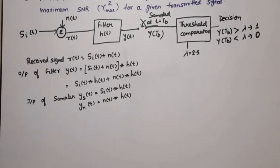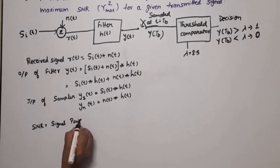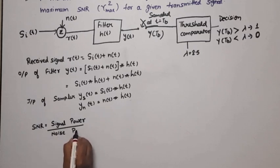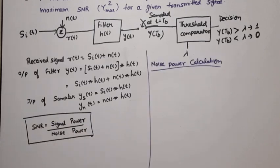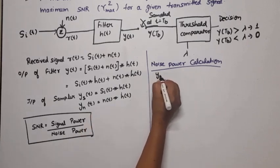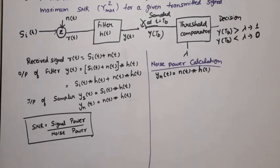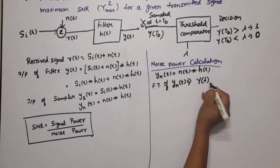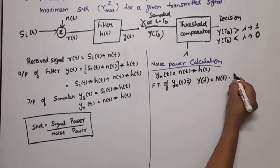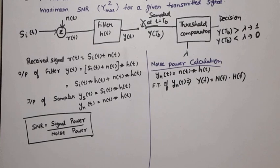Now we are calculating signal-to-noise ratio. SNR = signal power divided by noise power. We will first calculate noise power. The noise term is y_n(t) = n(t) * h(t). Taking the Fourier transform: Y_n(f) = N(f) · H(f). This is the noise input, this is the impulse response, and this will be our output in the frequency domain.